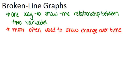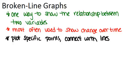When you're making a broken-line graph, you'll have specific points that you know and you can plot, and then you'll connect those with lines. Because you are connecting the points with lines, it really only makes sense to make broken-line graphs for continuous variables that exist everywhere between specific points.